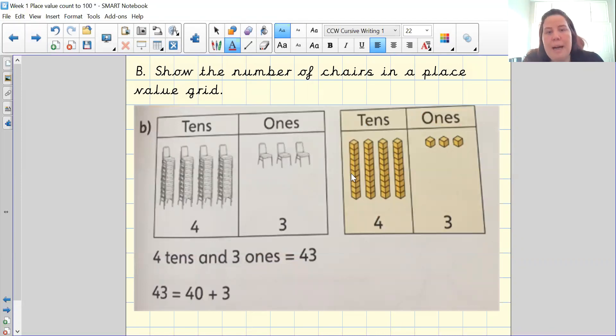And then the second part was do it representing your ten grids and one grids and this is how it should have looked. So well done if you have solved that at home. You've got your four tens which is your four sticks and then your three ones that represent three single chairs.